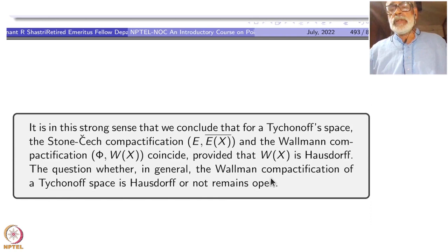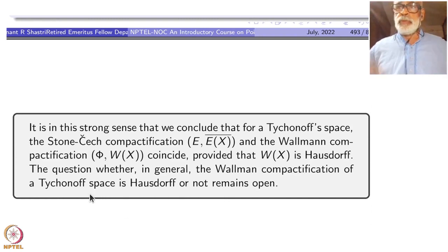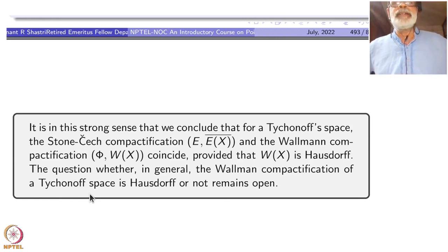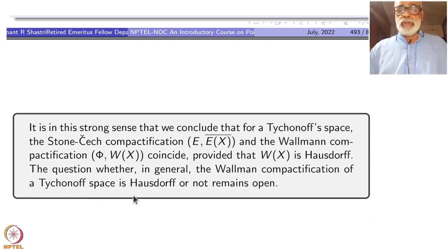In this strong sense, the Stone-Čech compactification and the Wallman compactification are the same for a Tychonoff space whose Wallman compactification is Hausdorff. The general question is: when is the Wallman compactification Hausdorff? Even assuming x is Tychonoff, it does not immediately follow that Wx is Hausdorff — more conditions may be needed. So we stop here; next time we will start a new topic. Thank you.